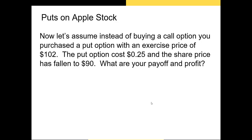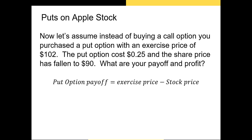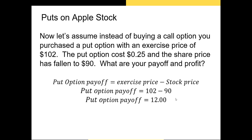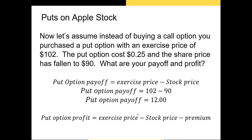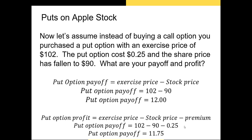Now let's assume that instead of buying a call option, you purchased a put option with an exercise price of $102 per share. The put option costs $0.25 and the share price has fallen to $90. Your put option payoff is the strike price minus the stock price: $102 minus $90 equals $12. Your profit is $102 minus $90 minus $0.25, equaling $11.75. You would absolutely want to exercise the put option.